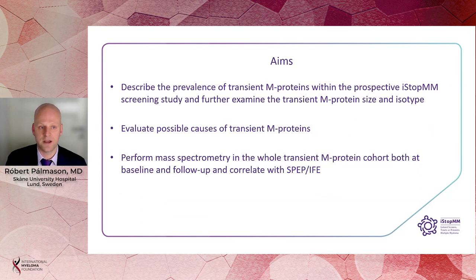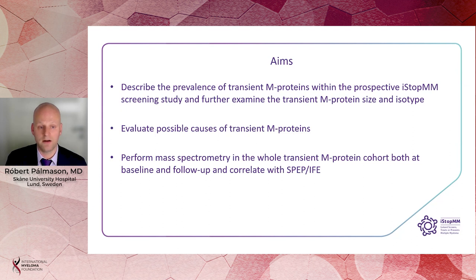So the aim of the current study is to describe the prevalence of transient M proteins within the prospective iSTOP-MM screening study and further examine the transient M protein's size and isotype. We want to evaluate possible causes of the transient M protein and perform mass spectrometry in the whole transient cohort, both at baseline and at follow-up, and correlate with SPEP or IFE.